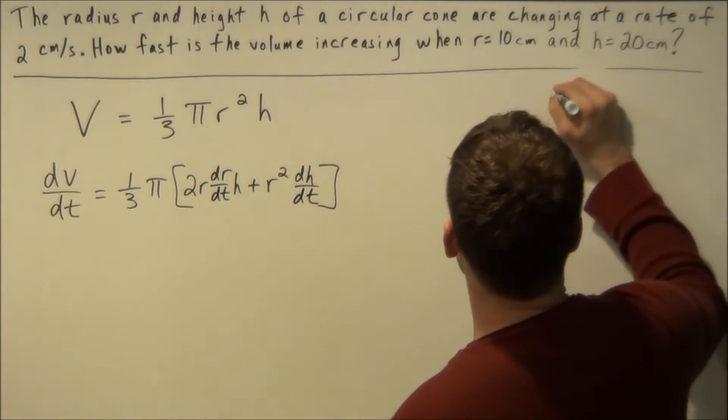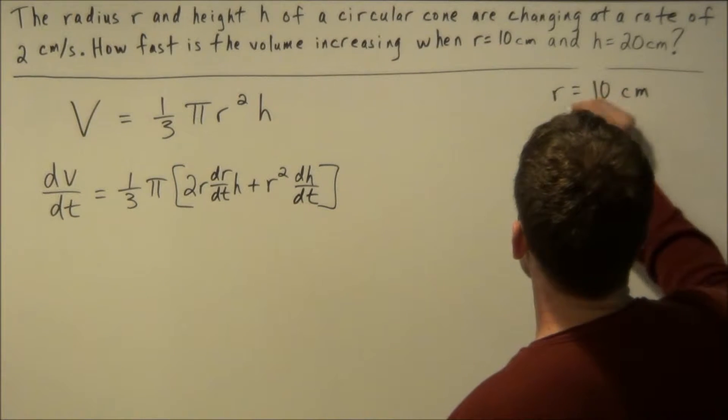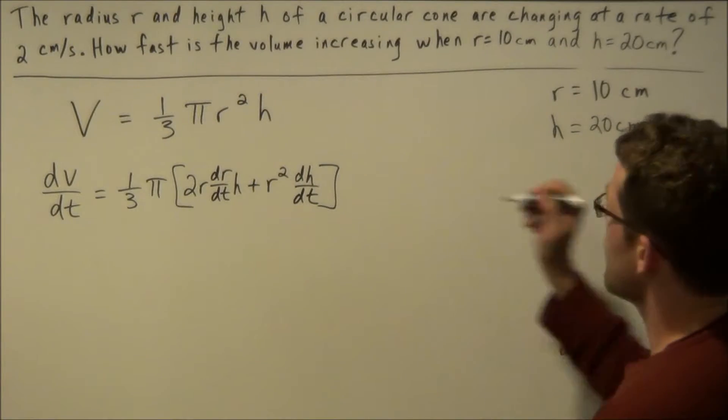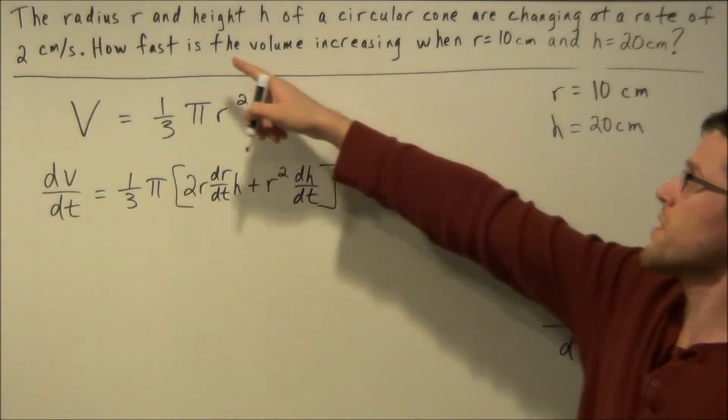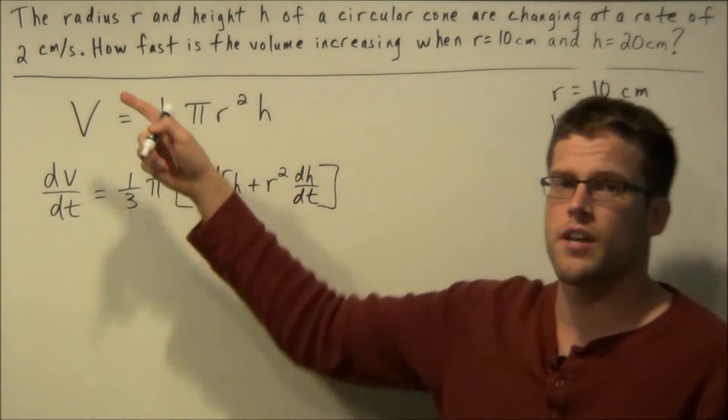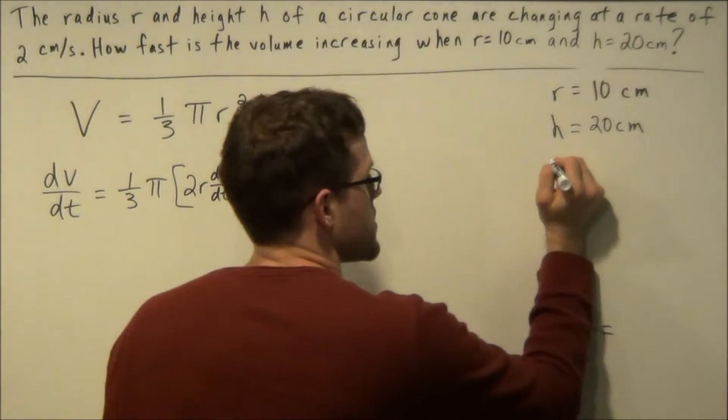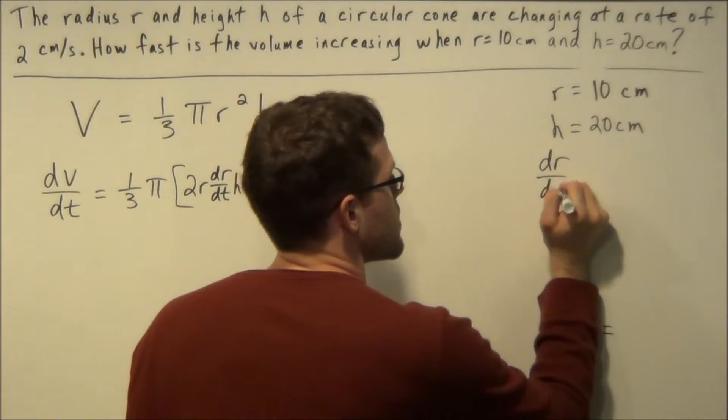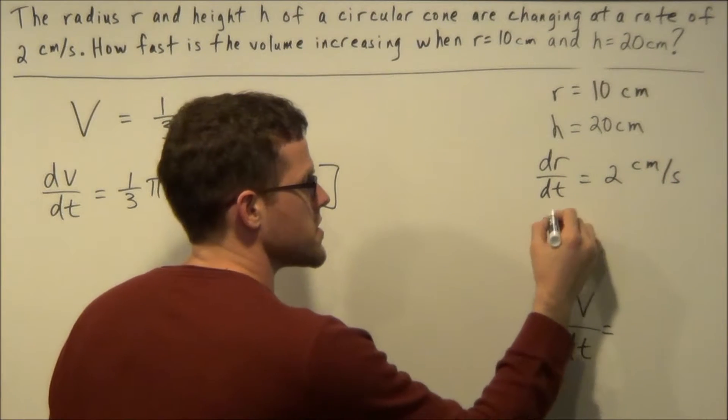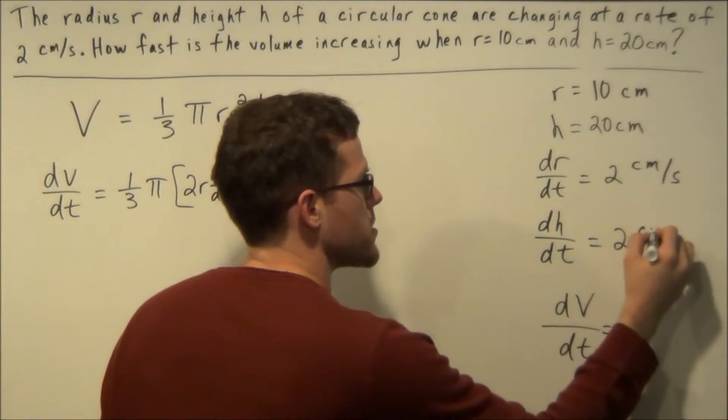Well notice right away they tell us that r is equal to 10 centimeters and they tell us that h is equal to 20 centimeters. And earlier in the problem they tell us the radius and height are changing at a rate of 2 centimeters per second. So with this information we could write dr/dt is equal to 2 centimeters per second and we have dh/dt is also equal to 2 centimeters per second.